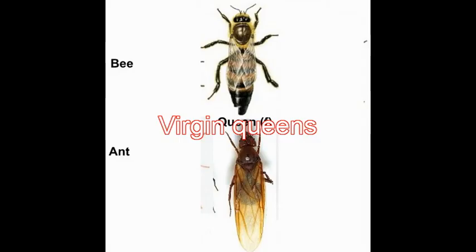Winged female ants and bees, called virgin queens, spend their adult lives being cared for and prepared to be queens. They are selectively turned into queens by workers when the queen of the colony dies or the colony gets too big.